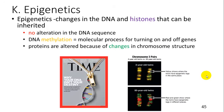Epigenetics refers to changes in the DNA and histones that can be inherited — not the genes themselves, but things surrounding the genes which affect gene expression. The process of turning genes on and off is called DNA methylation, where methyl groups are placed around nucleosomes and other areas to control expression. These can be altered because of changes in chromosome structure and those changes can be inherited. For example, 50-year-old twins can have different gene expression depending on which genes were methylated and which were not.